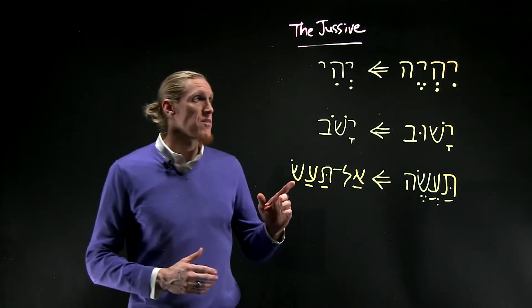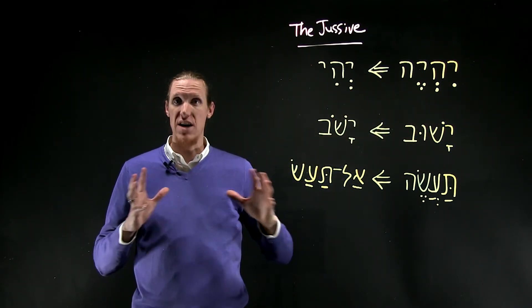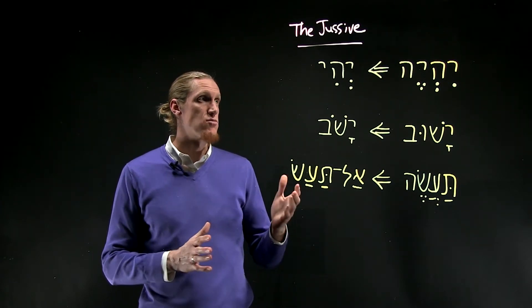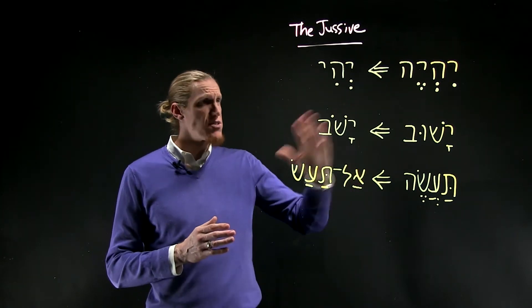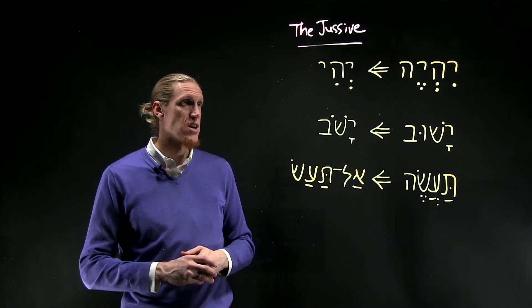The first example we have here is yihie. Yihie is the full third masculine singular imperfect form of the root he-yod-he, to be or to exist. The jussive form of that, which appears throughout the creation story in Genesis 1, is yehi.